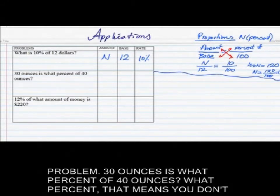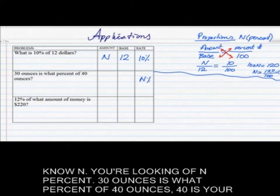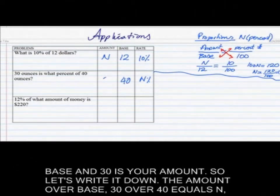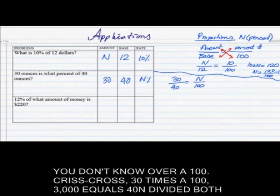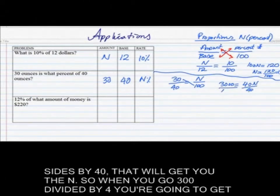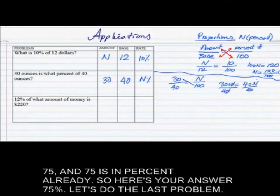30 ounces is what percent of 40 ounces? 40 is the base, 30 is the amount, n is unknown. So: 30/40 = n/100. Crisscross: 30 × 100 = 3000 = 40n. Divide both sides by 40: n = 3000/40 = 75. And 75 is already in percent, so the answer is 75%.